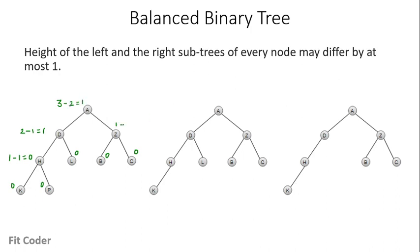For node A, the left subtree has a height of three and the right subtree has a height of two, so the difference is one. For node Z, both left and right subtrees have a height of one, so the difference is zero. For all nodes, the height difference between left and right subtree is less than or equal to one, so this is a balanced binary tree. The second tree is also a balanced binary tree for the same reasons.